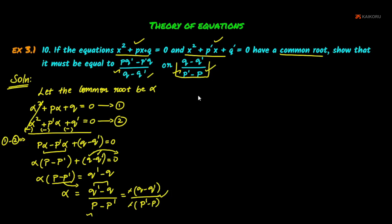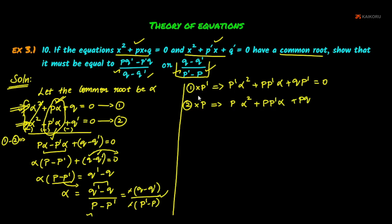Next, we will use another method. First we cancel the α² term by making the coefficients the same. So multiply the first equation by p' to get p'α² + p'pα + p'q = 0. Multiply the second equation by p to get pα² + pp'α + pq' = 0.